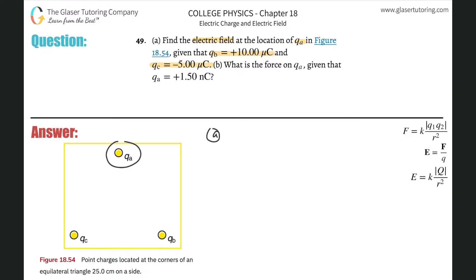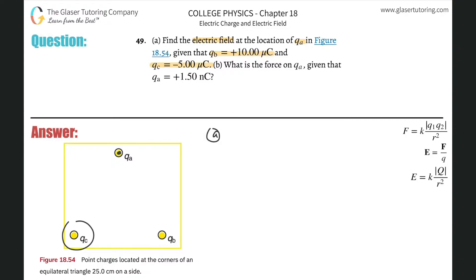We have to find the electric field at q_a, so I'll put a dot there. That means I need to know the electric fields produced by both q_c and q_b at this particular point. First, I identify the charges: q_b is positive and q_c is negative. Now I think about how the electric field lines point — pretend q_a isn't even here.